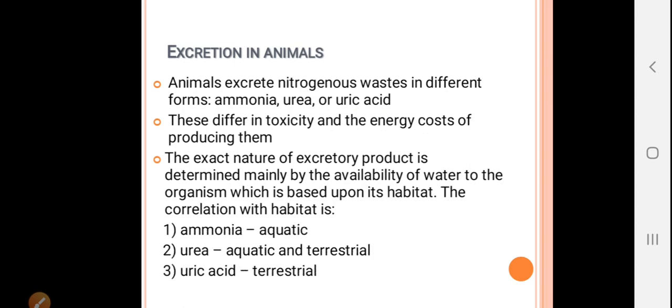There are three main nitrogenous wastes excreted by animals: ammonia, second is urea, and third is uric acid. Ammonia is excreted by aquatic animals. Urea is excreted by both aquatic and terrestrial animals.